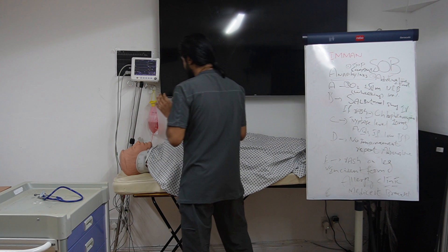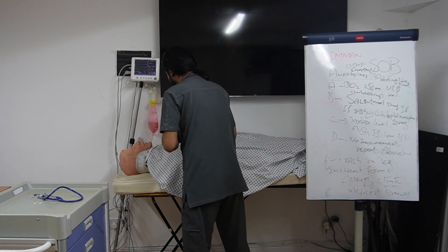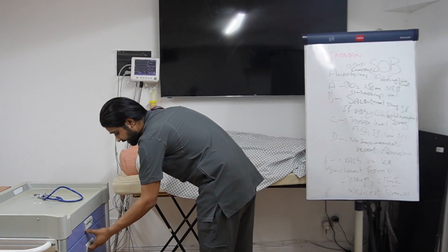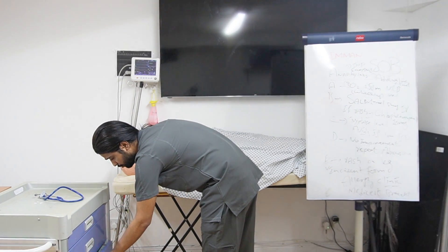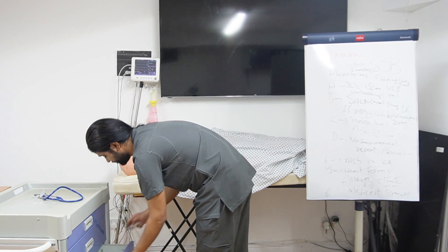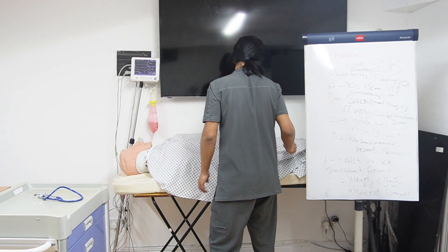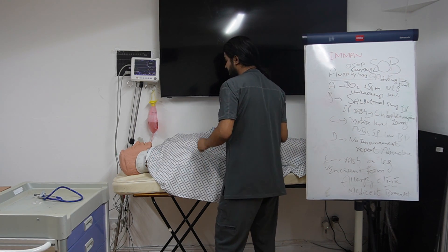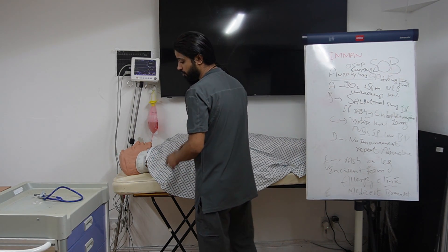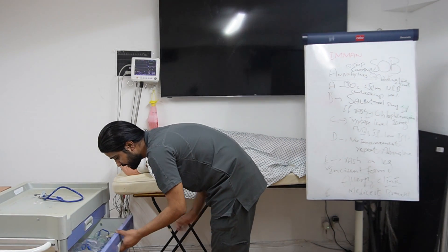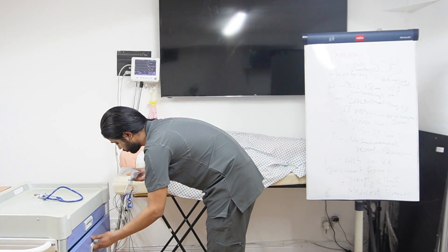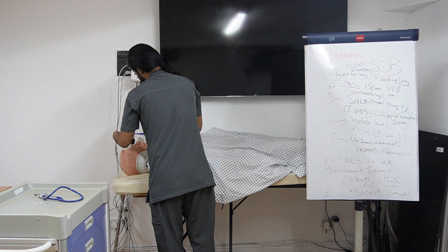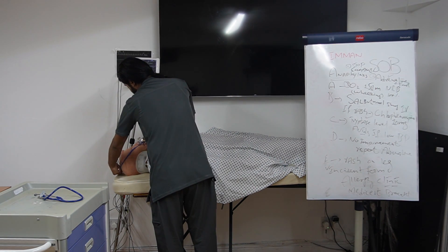Michael, I am suspecting that you are having an anaphylaxis reaction because of the blood. So I am going to give you Adrenaline 0.5mg, 1 in 1000, intramuscular into your thigh. You may feel a sharp scratch. I would also like to give my patient oxygen, 100% at 15 litres per minute. Michael, can you please lift your head for me? Yes Doctor. This mask will help you with breathing.